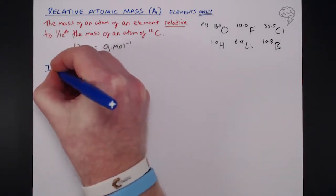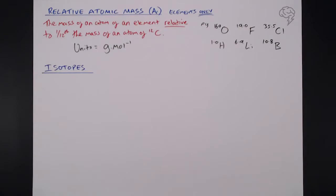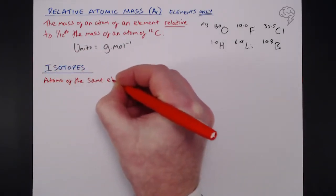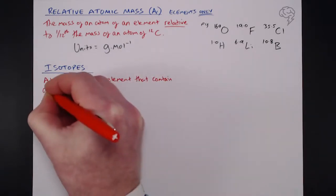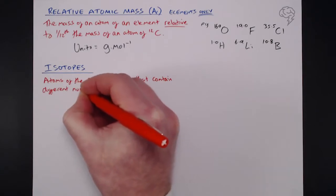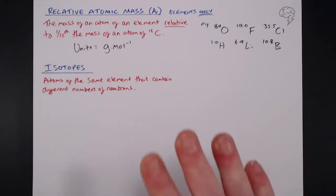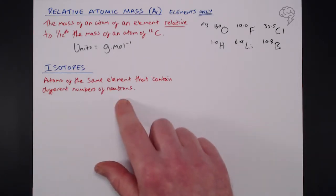So let's deal with what an isotope is, first of all. So if you're asked what an isotope is, these are atoms of the same element that contain different numbers of neutrons.